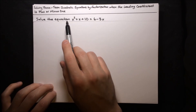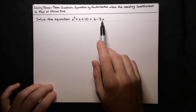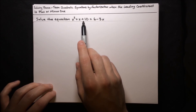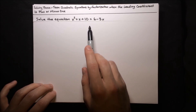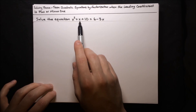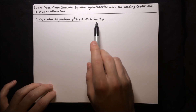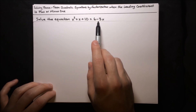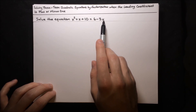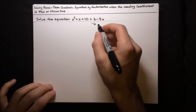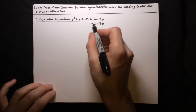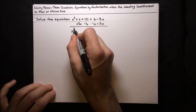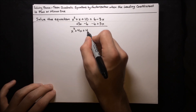Here's a final example. We want to solve x squared plus x plus 10 equals 6 minus 3x. Before factorizing, remember: the whole point of factorizing is to use the zero product property, which requires the right-hand side to equal zero. So we first need to rearrange. We subtract 6 and add 3x to both sides, which gives us x squared plus 4x plus 4 equals 0.